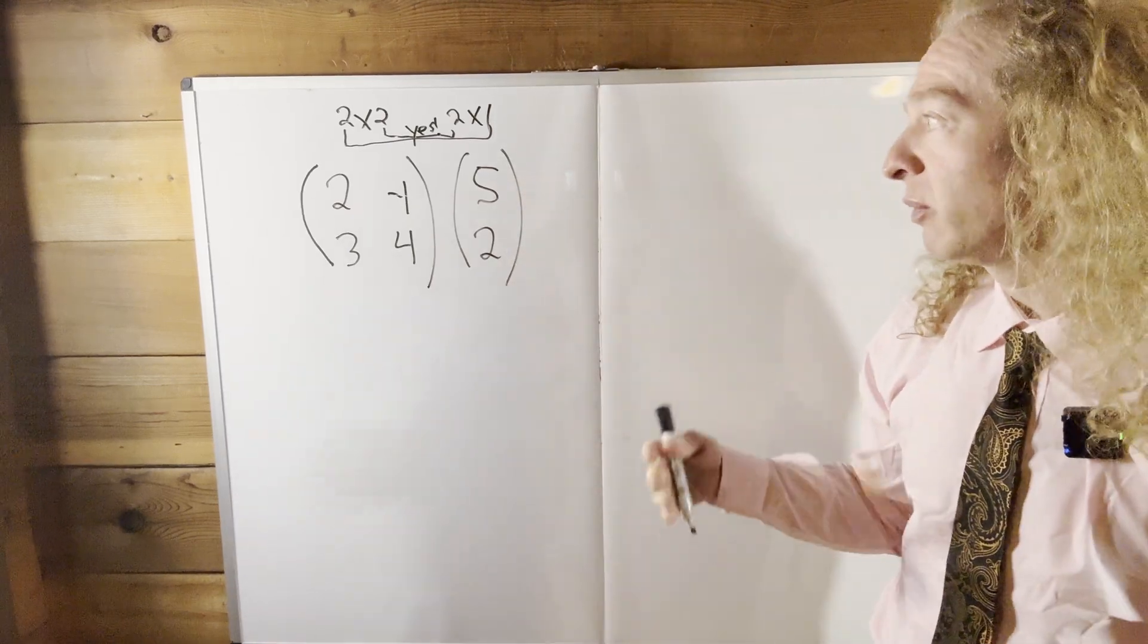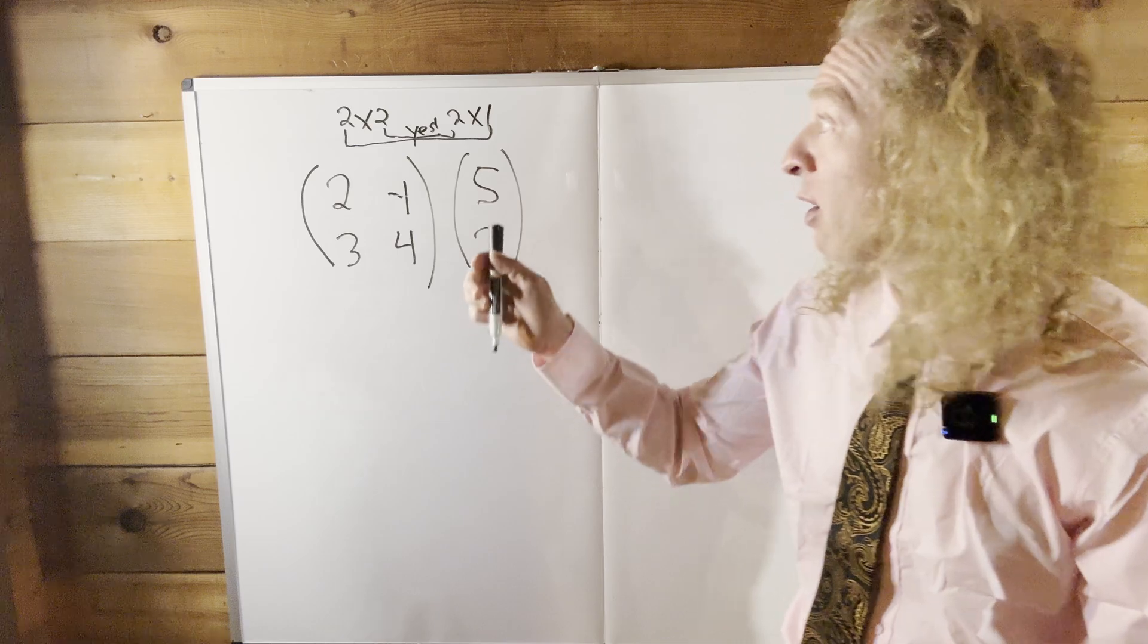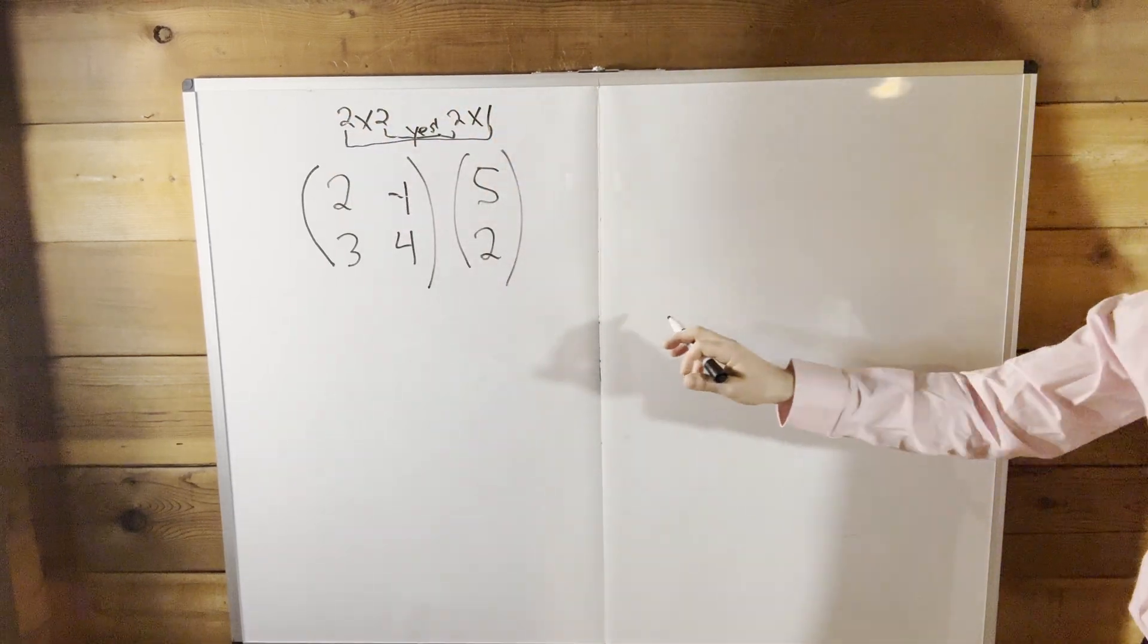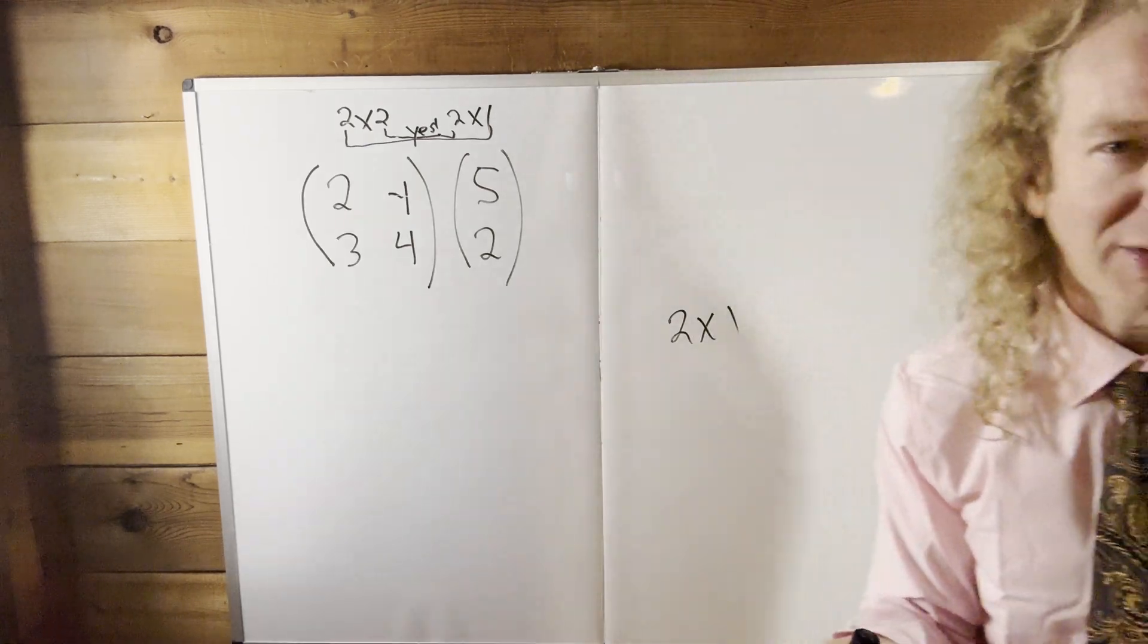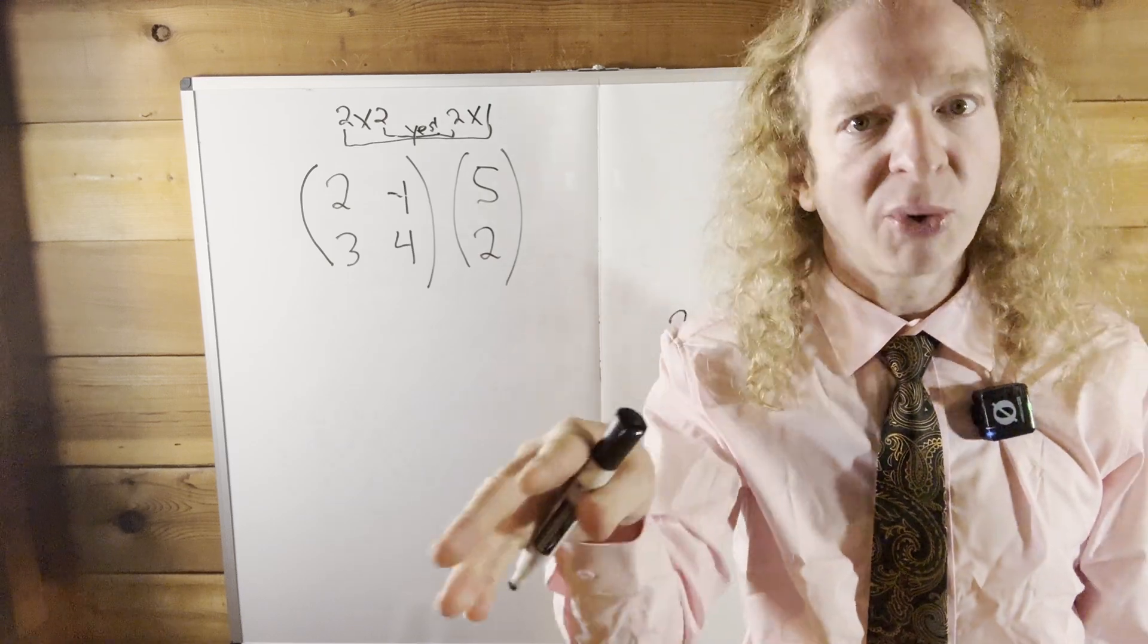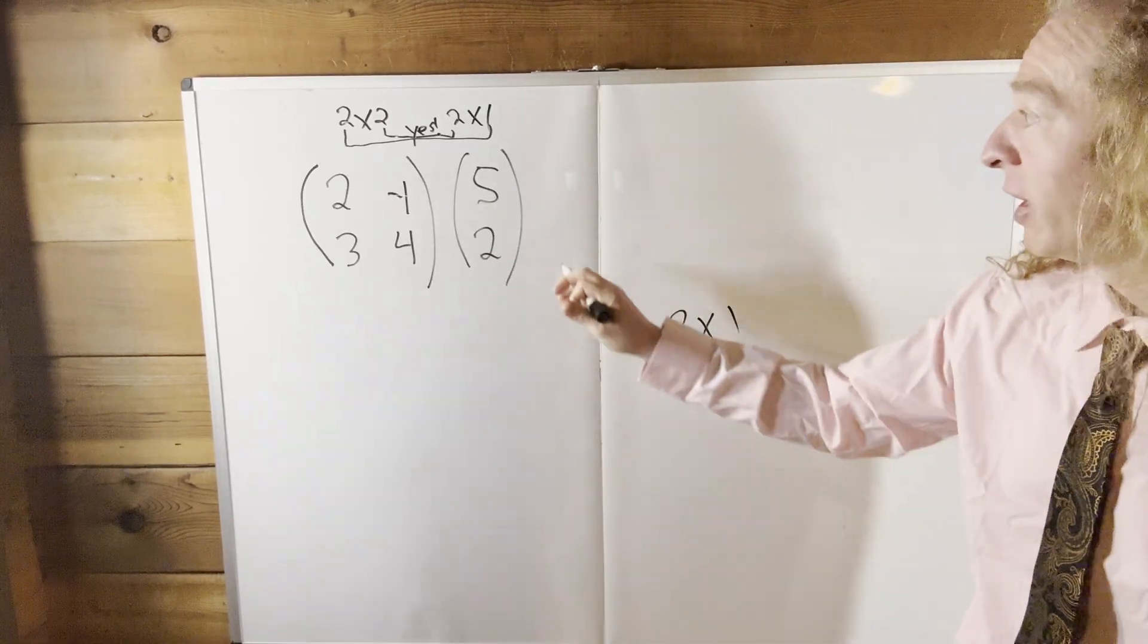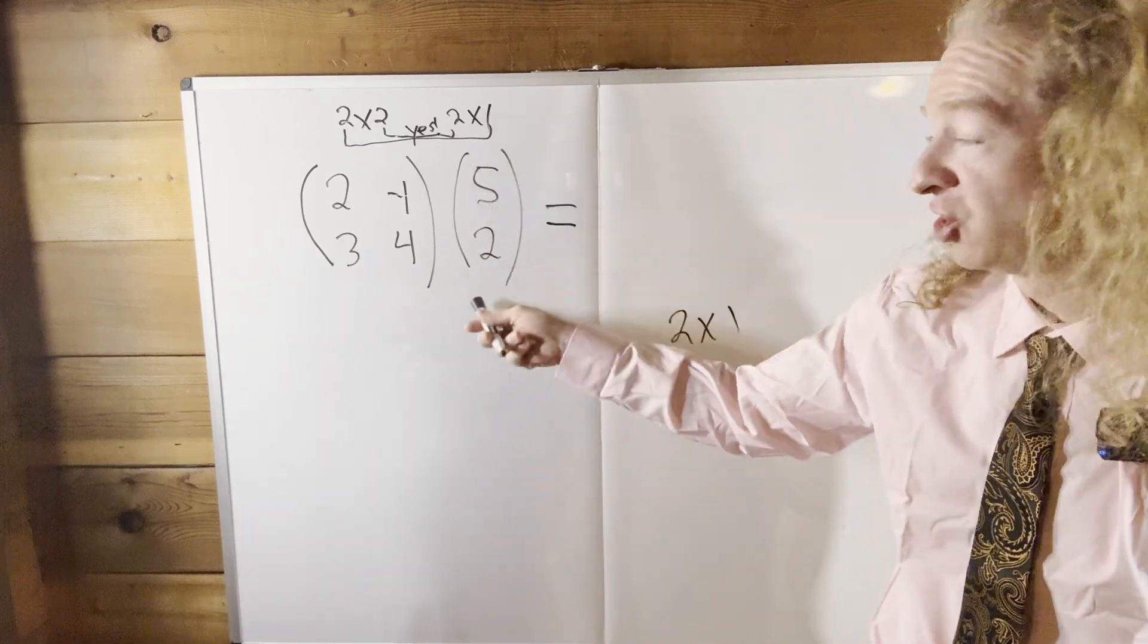Okay, so now that we know that we can multiply, let's go ahead and do the problem. Now we know that the resulting matrix is going to be a two by one matrix, so I'm going to come over here and I'm just going to write two by one, just so we know where we're going. You can't get to where you're going if you don't know where you're going. So it's important to know that the result is going to be two by one. So we're going to have two rows and one column. So basically, it's going to look just like this one.